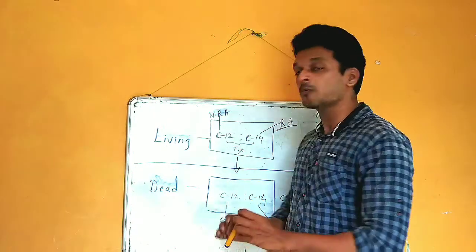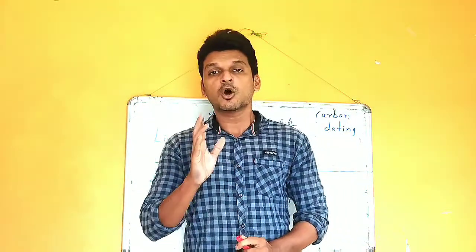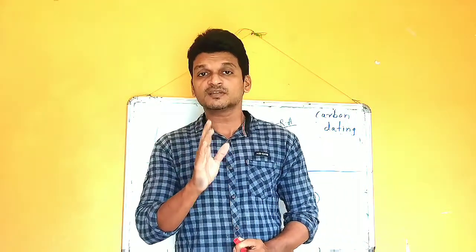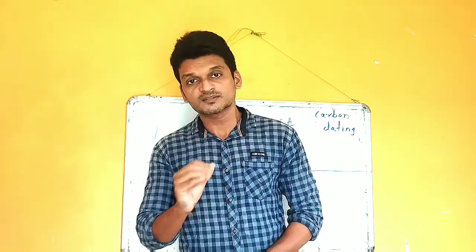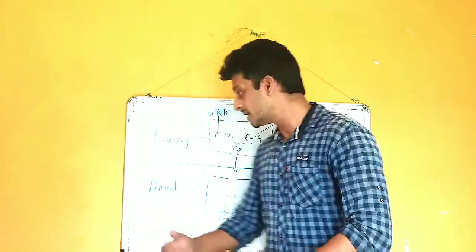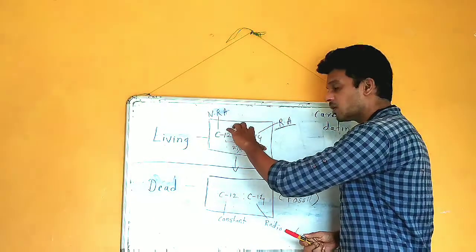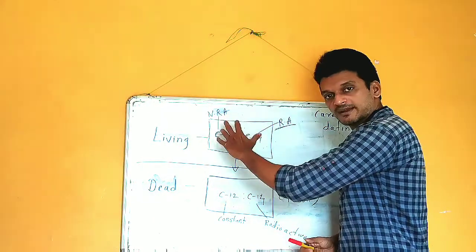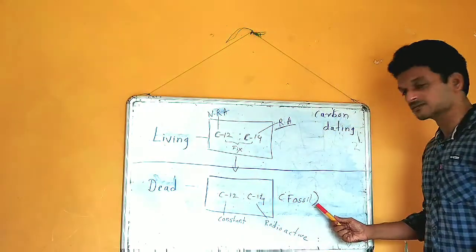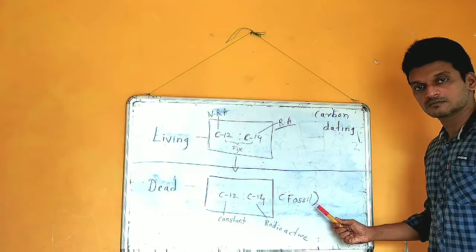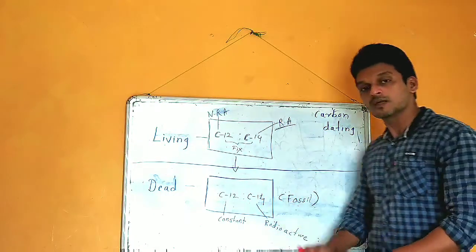The ratio of carbon-12 to carbon-14 is always fixed as long as the organism is living. But once that organism dies and its body is preserved in the form of a fossil, something changes.